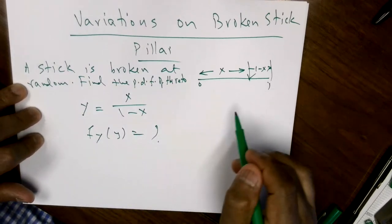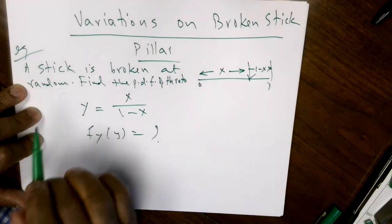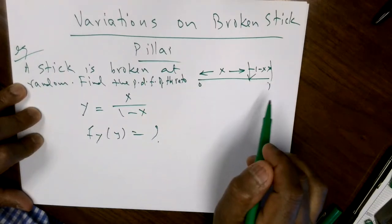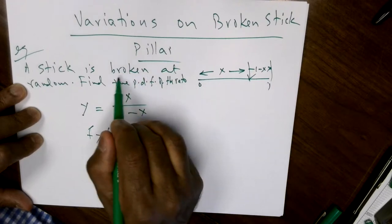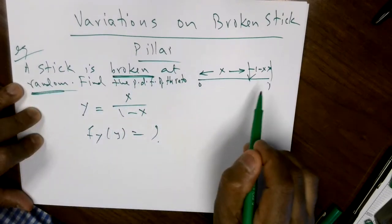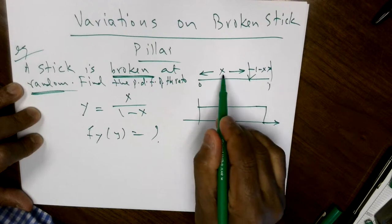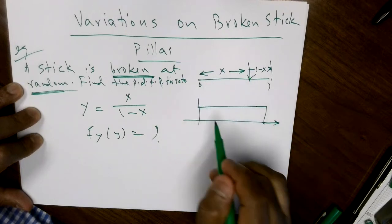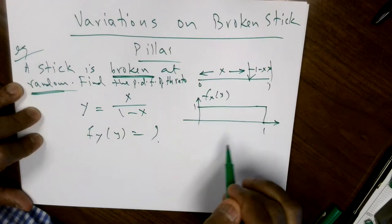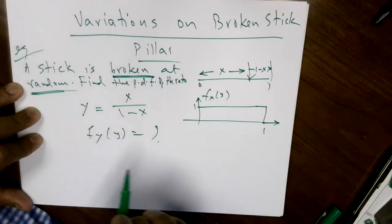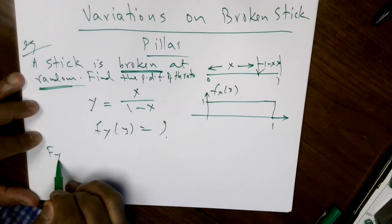Nothing else is given except that the stick is broken at random, so we make a common sense assumption. If the stick is of length 1 and you could break it anywhere at random, a reasonable assumption is that the density function of x — the length of one piece — is a uniform random variable. This is implicit in the problem. I will do it two different ways and then make some variations.